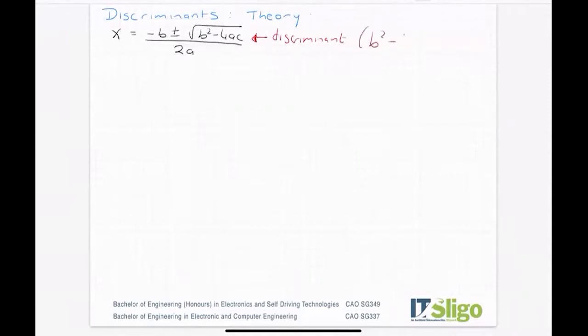In other words, b squared minus 4ac. That piece, the b squared minus 4ac, tells us what type of roots a quadratic will have. Remember the minus b formula is used to find the roots or the solutions of a quadratic. This piece here underneath it tells us the type of roots.